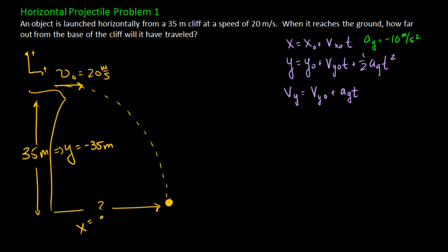Now there's one other trick to solving horizontally launched projectile problems. Usually in a problem we're given initial velocity and an angle and we can use trigonometry to figure out the initial x velocity and the initial y velocity. Here we're only given a velocity, we're not given any angle, but if you think about it carefully, this is launched horizontally.